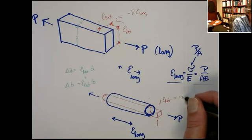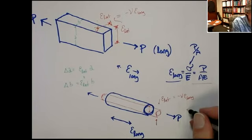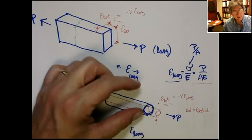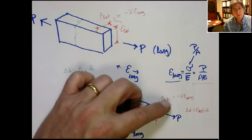The diametric strain is going to be equal to minus nu times the longitudinal strain — the strain in the pull direction. The change in diameter is the lateral strain times the original diameter. So now the diameter changes: the strain in that direction multiplied by the original diameter.